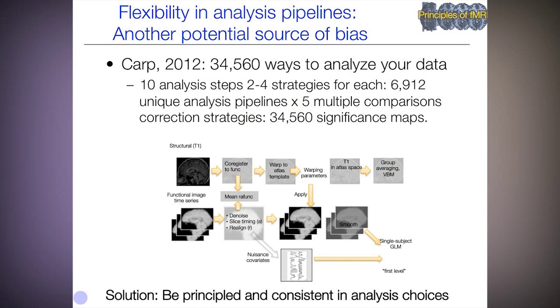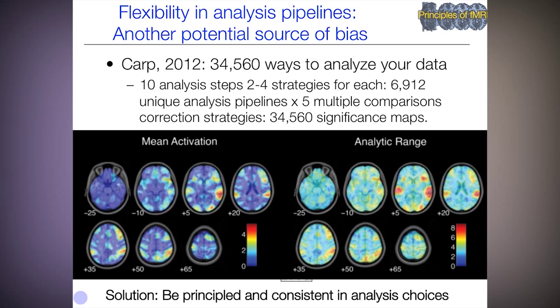This paper by Josh Karp analyzed the same dataset in 34,000 different ways — by picking different analysis steps and strategies, yielding almost 7,000 unique analysis pipelines and five multiple comparisons correction strategies. The mean activation and range across all analysis maps shows a lot of variability according to pipeline choices. Some pipelines are better than others, but the solution is to be principled and consistent in your choices. It's fine to improve your pipeline, but those choices should be made in advance of looking at results as much as possible.